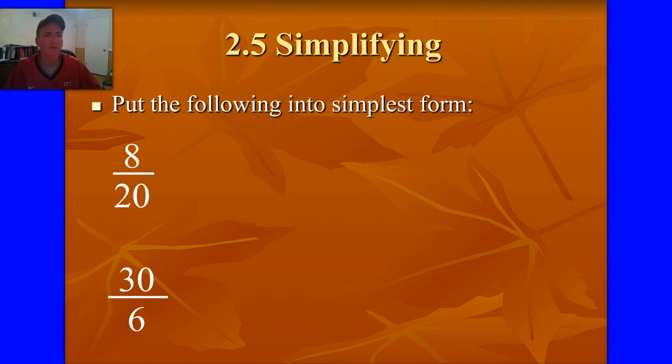Put something into simplest form. Let's take 8/20. I want to ask myself, what's the biggest number that will go into both 8 and 20? And what we call that is the greatest common factor. We're going to get more into that later. But that's what we're doing. What's the greatest common factor of 8 and 20? It's four. So I'm going to divide out 4. 8 divided by 4 is 2, 20 divided by 4 is 5. Two-fifths, that's the simplest form.